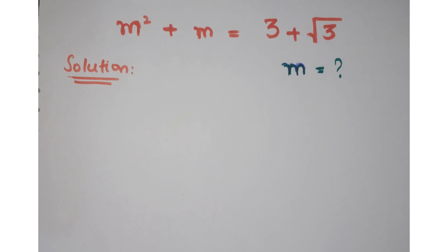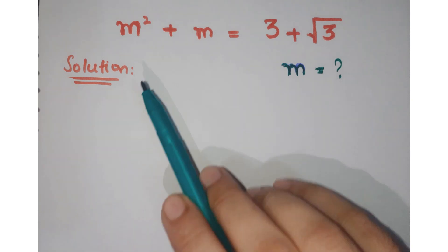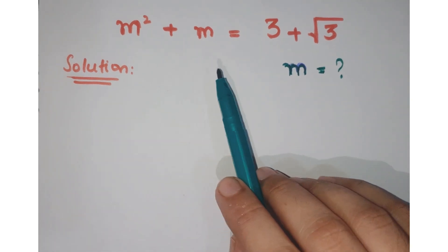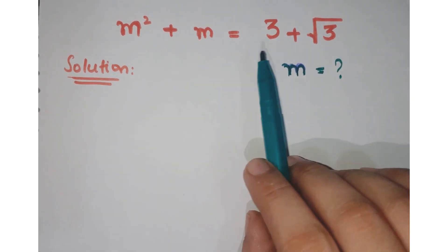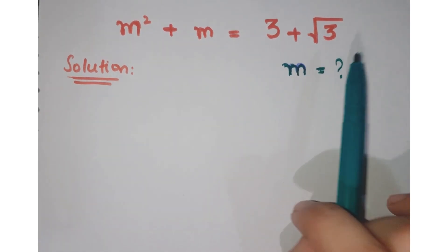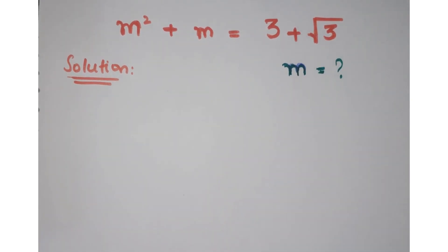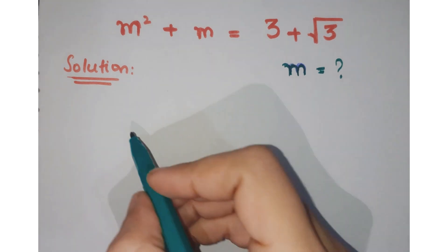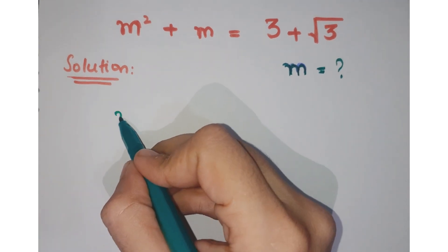Hello friends, welcome to the Learning Curve. Now look at this question. The question is m squared plus m equals 3 plus under root 3, and we have to find the value of m. So let's see how we proceed.